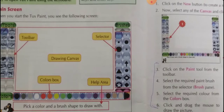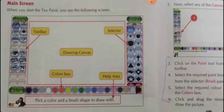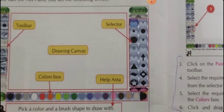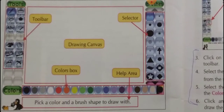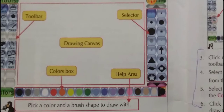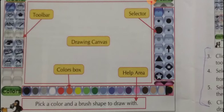The 5 parts of the Tuxpaint window are: 1 - Toolbar, 2 - Drawing Canvas, 3 - Color Box, 4 - Help Area, and 5 - Selector. The toolbar is at the left side of the Tuxpaint window. The selector is on the right side. The drawing canvas is at the center. The color box is at the bottom, and below it you can see the help area.